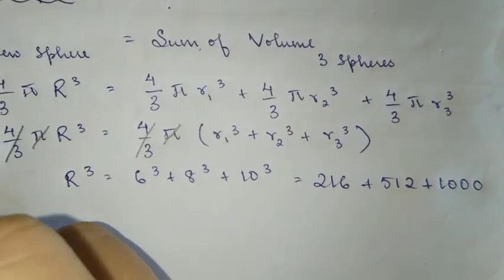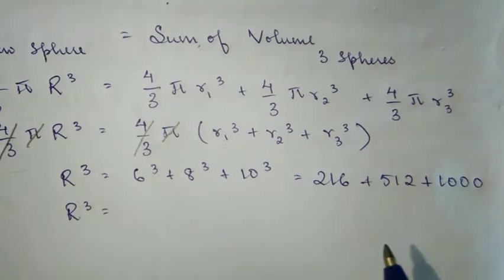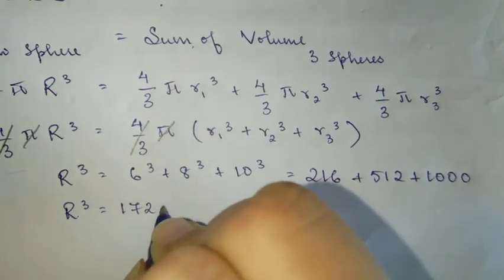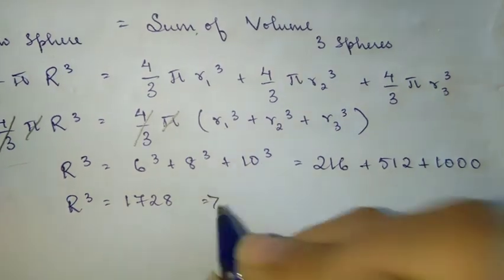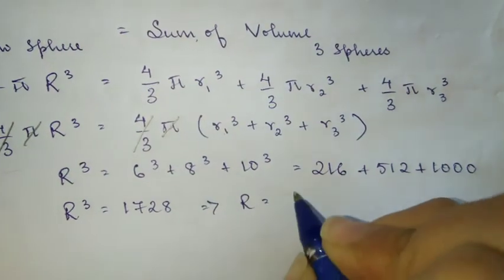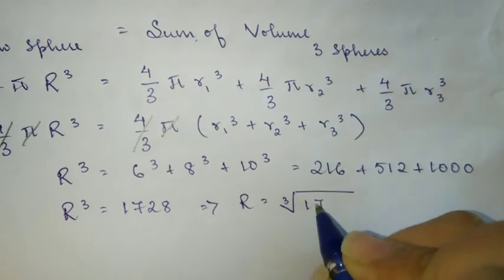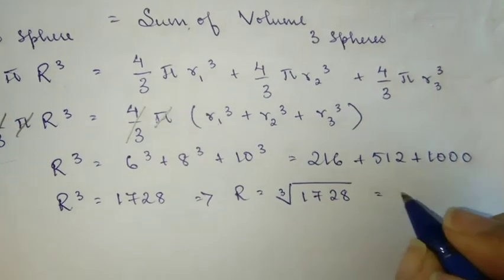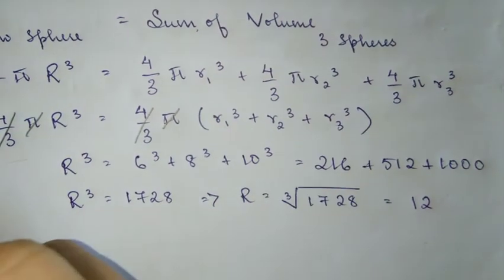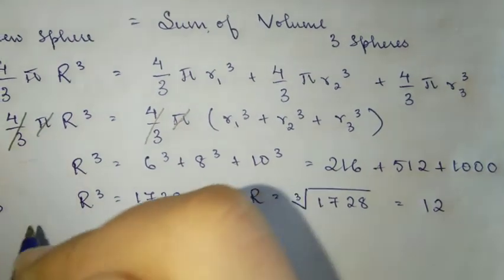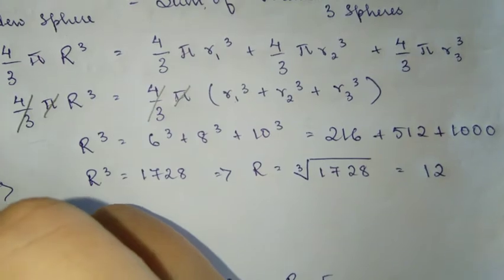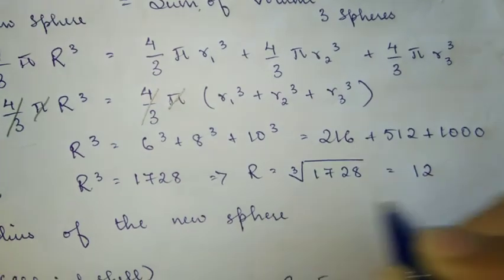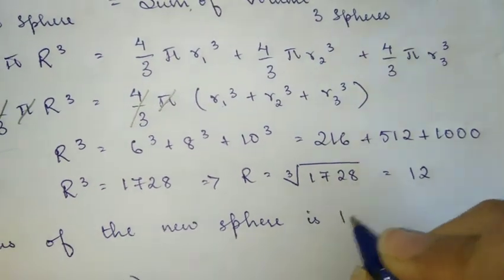If you add all these numbers it will give you 1728. Therefore r cube equals 1728. If you want to find r, you're going to find cube root on both sides. This will become r equals cube root of 1728, and 1728 is the cube of 12. So you have the radius to be 12 centimeter. Hence, the radius of the new sphere is 12 centimeter.